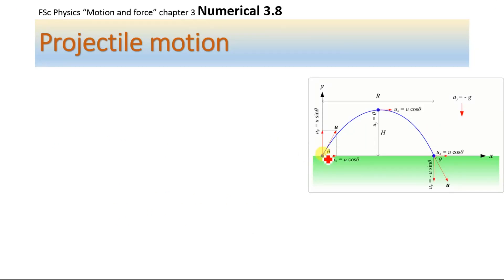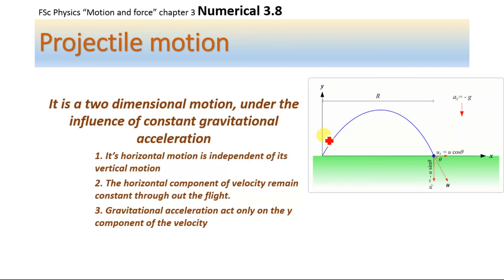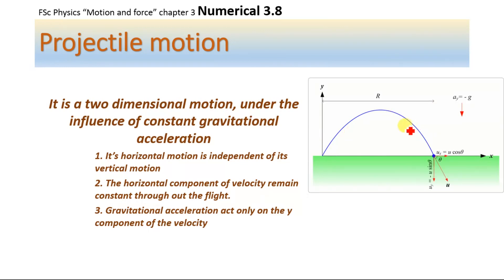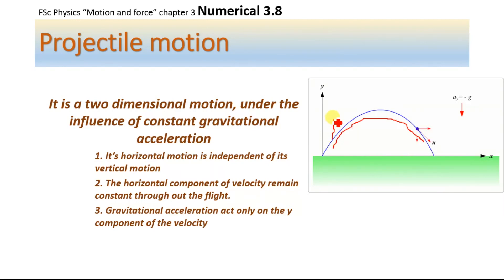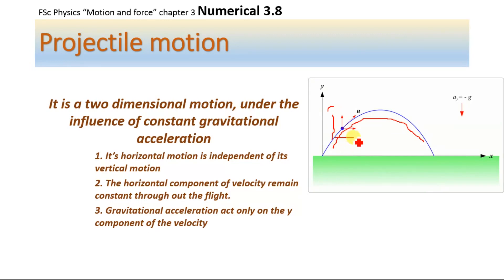This short animation shows the motion of a projectile. A projectile motion is a two-dimensional motion under the influence of constant gravitational acceleration. This is the path followed by a projectile, and this object is travelling in two dimensions — one is along the y-axis, while the second is along the x-axis or horizontal axis.